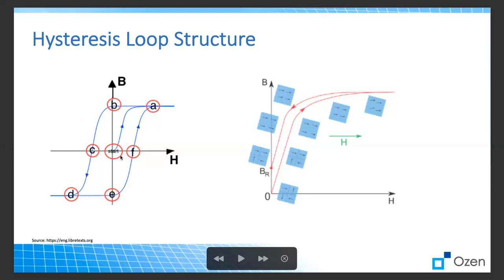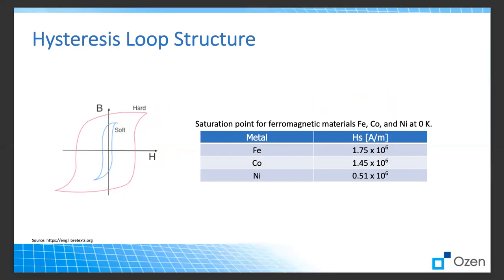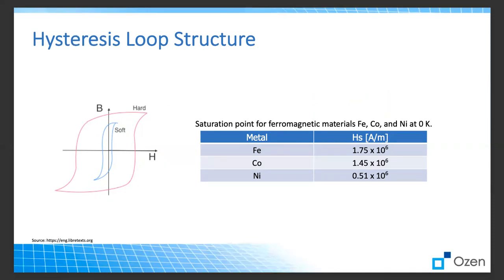That's what happens in hysteresis in a nutshell. It's worth noting that we have different types of hysteresis profiles. Some have a large area between the curves and some have a smaller area, depending on how soft or hard the material is. They have different applications with different pros and cons, and industries choose one or the other depending on their needs. Different metals have different parameters.